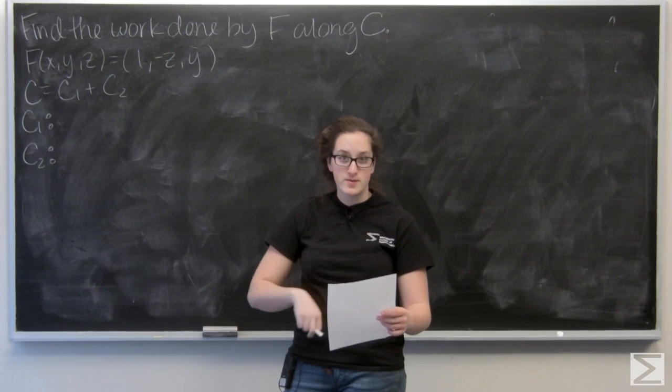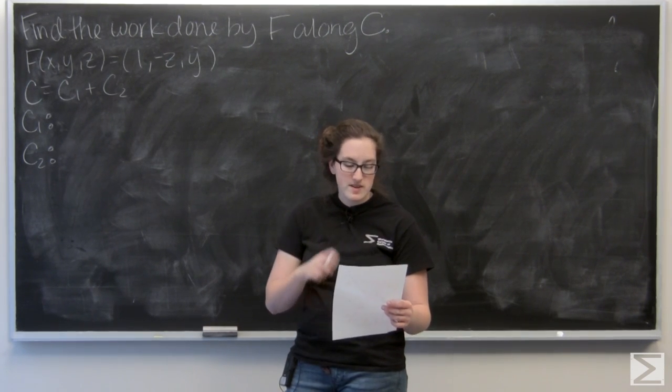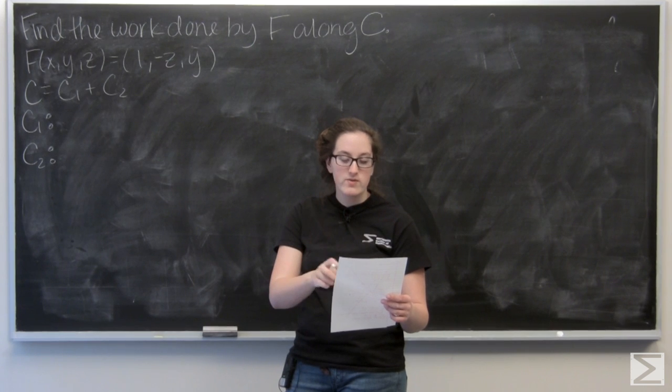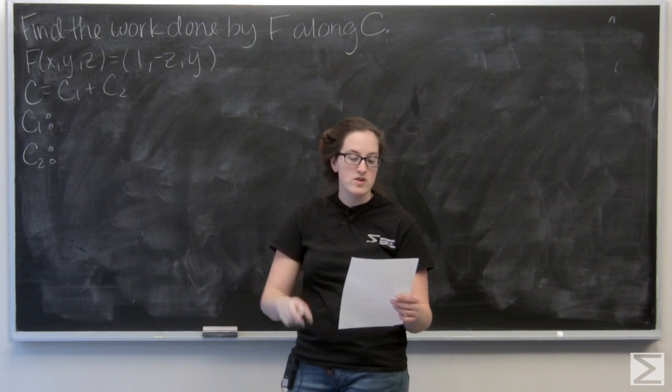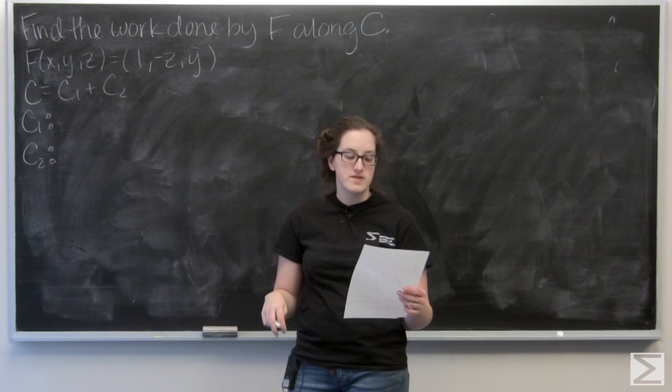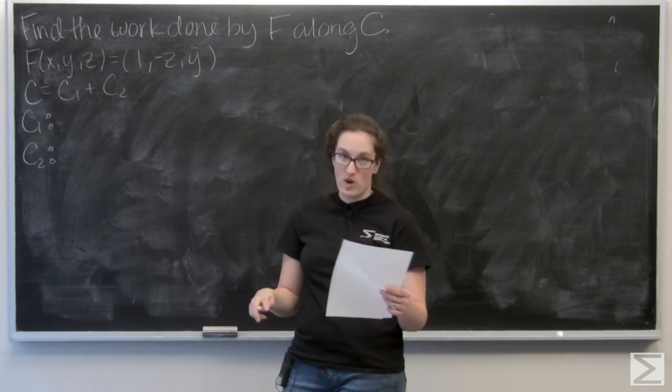Let's read the description for c1. So it is the portion of the parabola where y equals x squared and z equals 0 from (0,0,0) to (1,1,0).